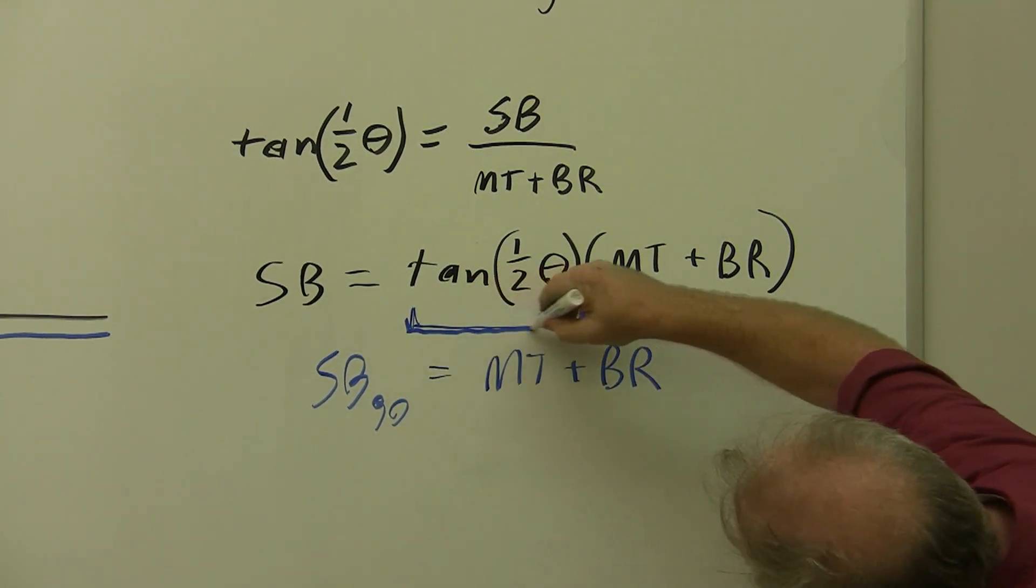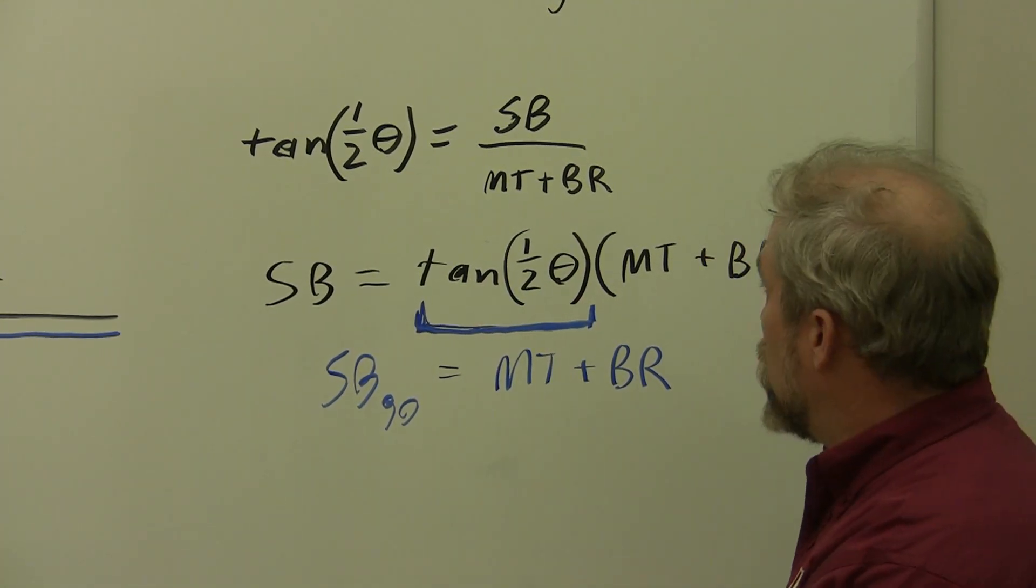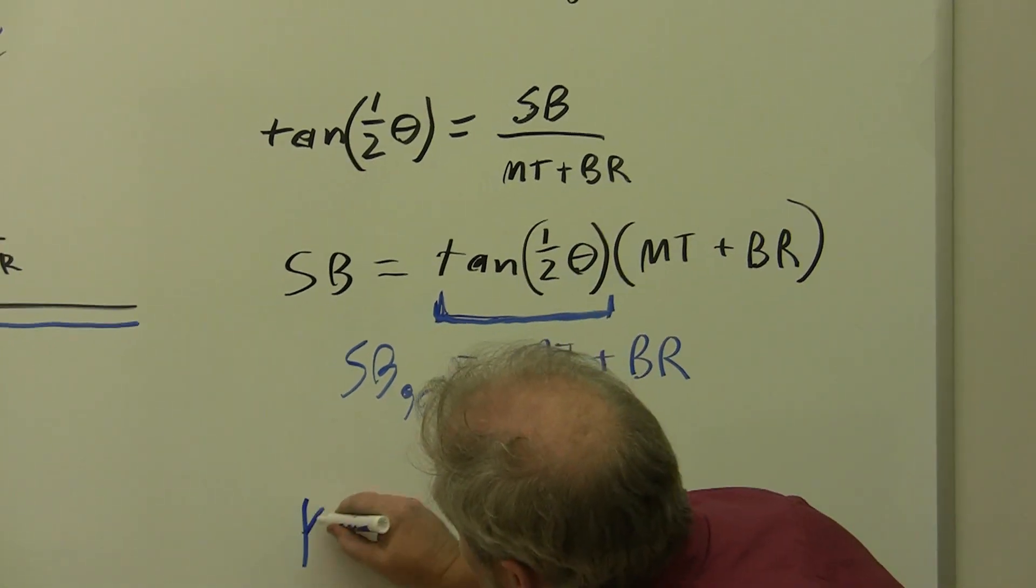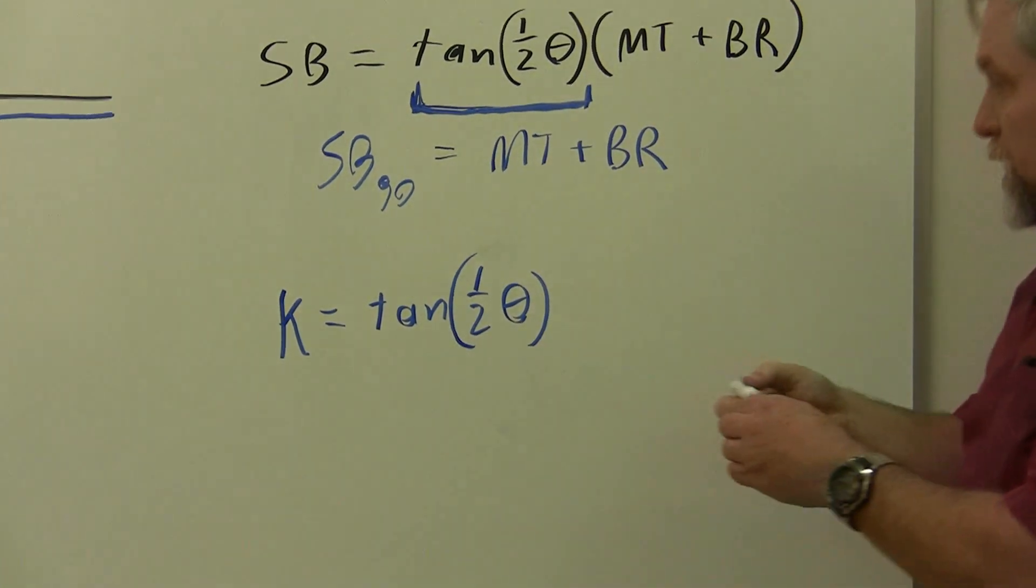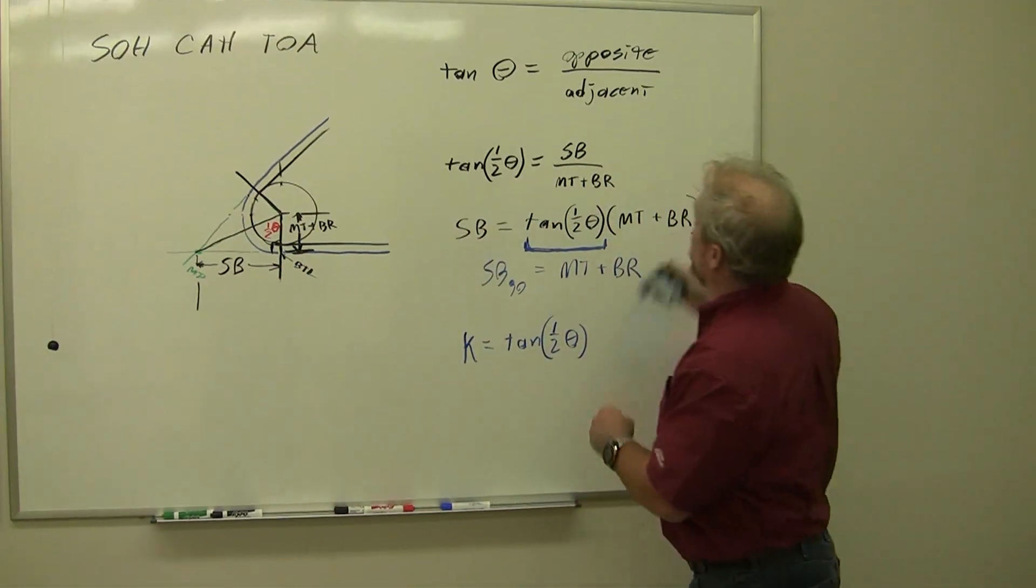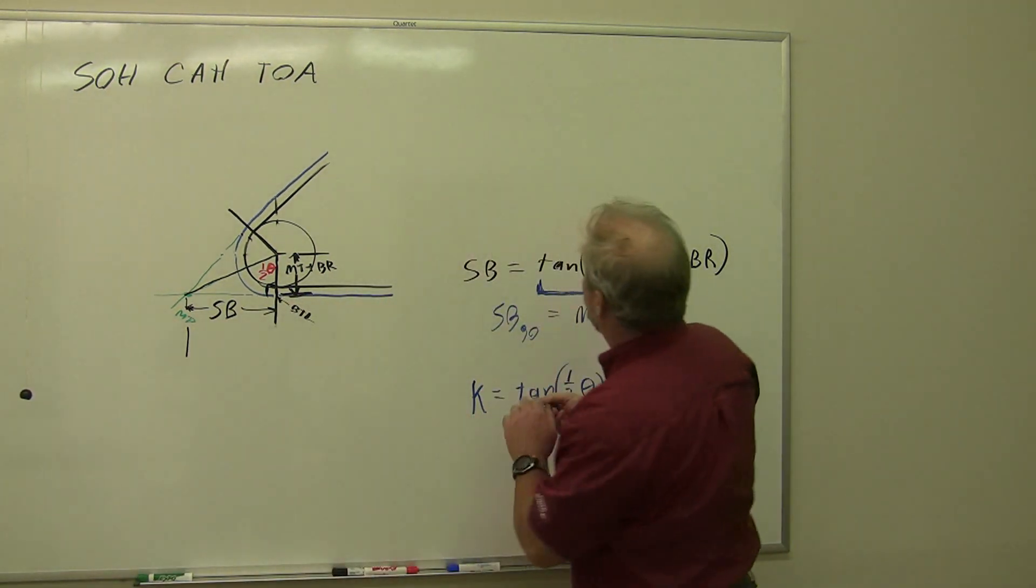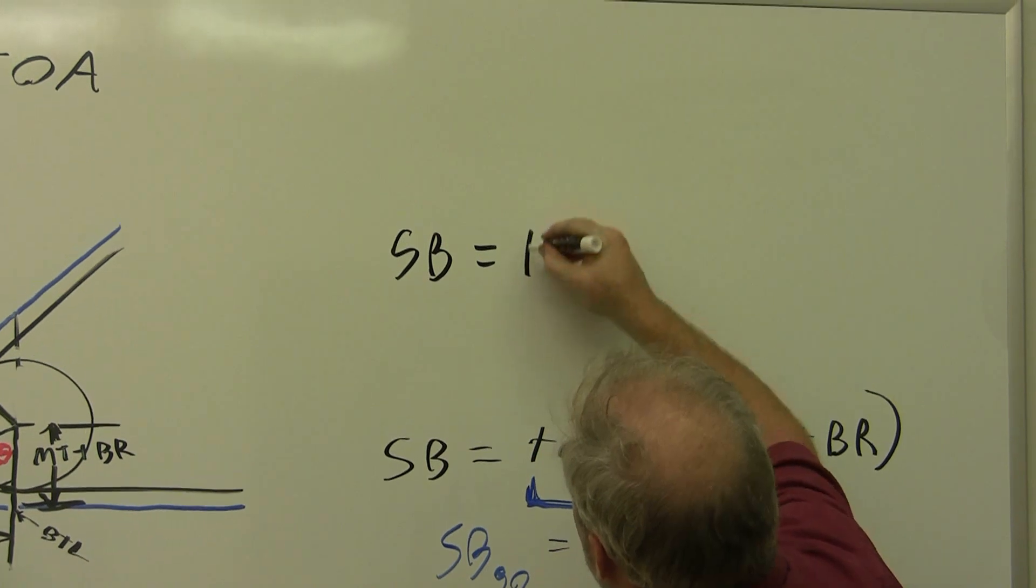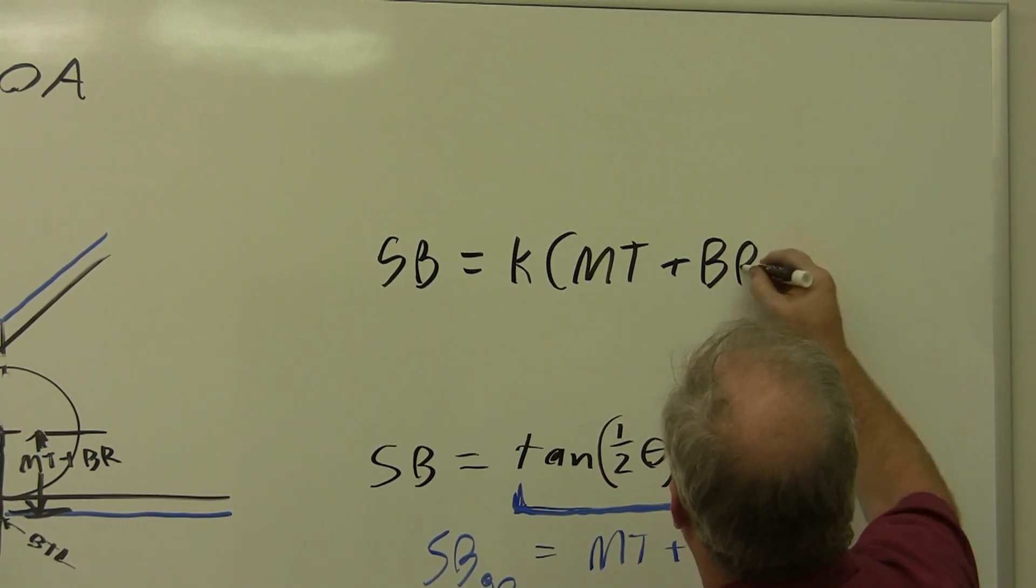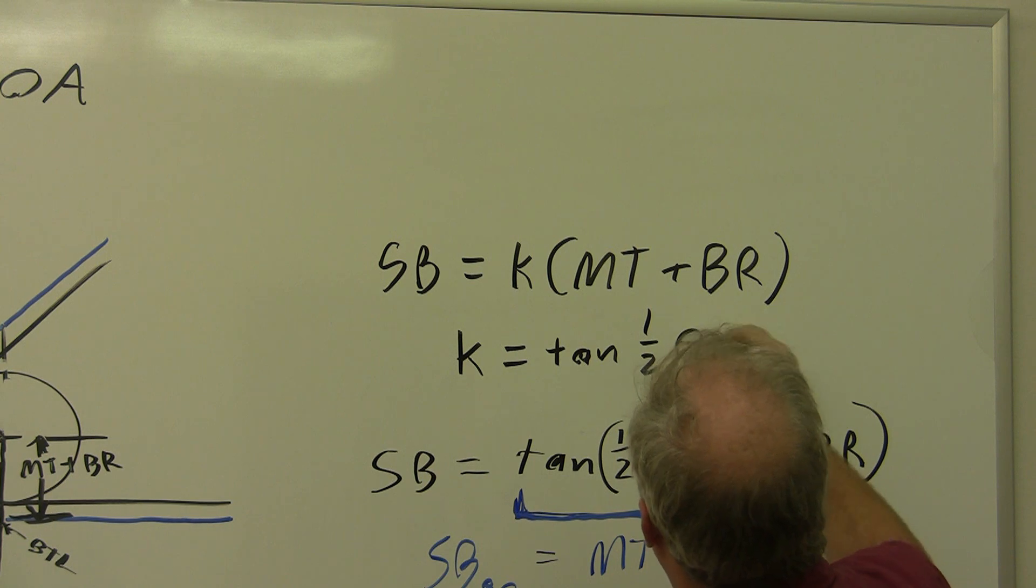Because traditionally mechanics haven't been very good at math necessarily, that's not their forte, the FAA has replaced this quantity tangent of one half theta with something that they call K. K equals tangent of one half of the angle that we're bending at. This gives us a new formula: setback for any angle, not just 90, equals K times material thickness plus bend radius, where K is tangent of one half of the angle.